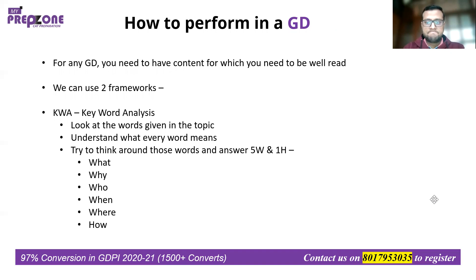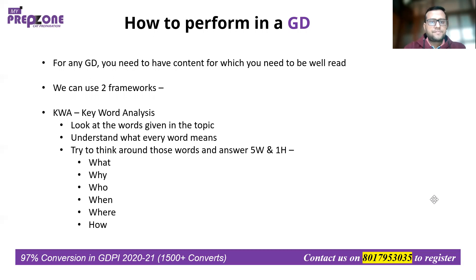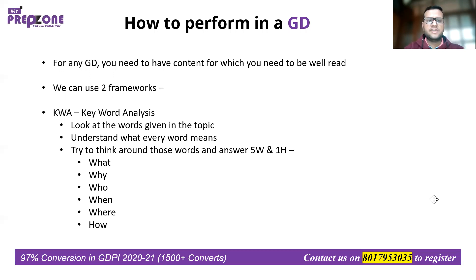In parallel, there are two frameworks to help you do well in a GD. The first is the KWA — Keyword Analysis. As the name suggests, you look at the words given in the topic, understand what every word means, and then think around these six questions: the Five Ws and One H — What, Why, Who, When, Where, and How. Once you've thought on those lines, you'll have sufficient points to start the GD and make your points during it.